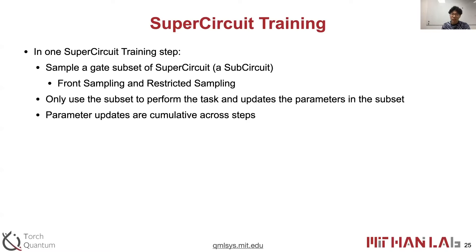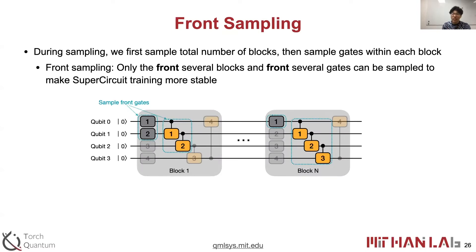In one step, we use front sampling and restricted sampling to sample a sub-circuit candidate and use it for inference and parameter updates. For the super circuit, we can stack multiple blocks to enable a larger number of gates and capacity. During sampling, we first sample the total number of blocks, then sample gates within each block. Front sampling means we only sample from the first several blocks and gates. For example, if we sample two gates in the first layer, they will be gate 1 and gate 2; if we sample only one gate, that will be gate 1.